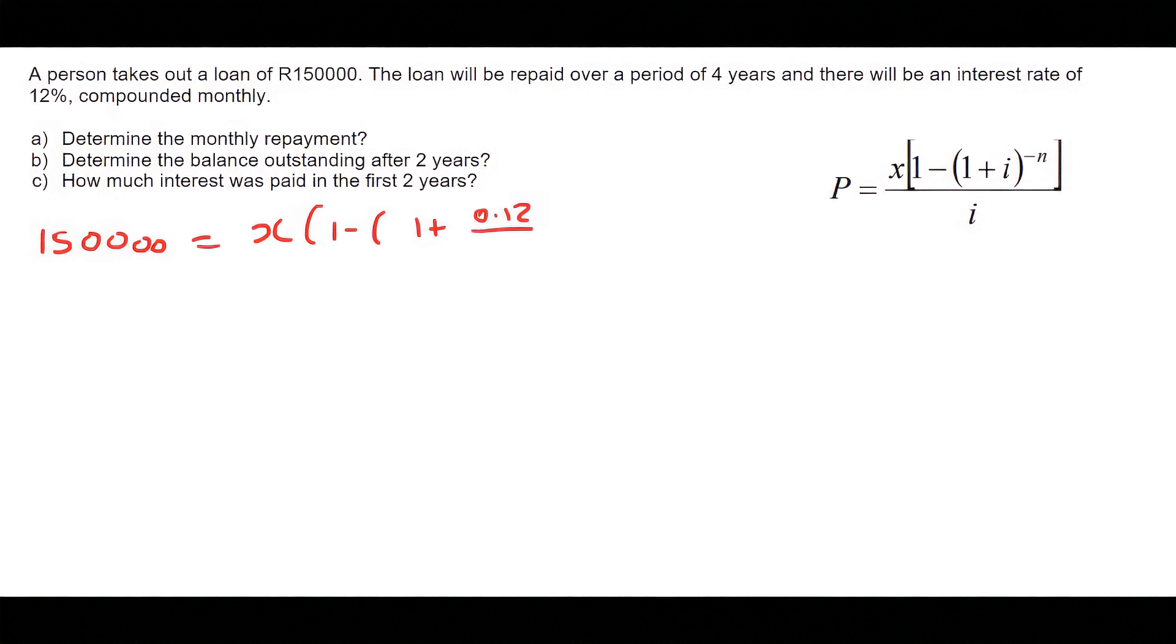The interest rate is 12%, compounded monthly, and it's four years, so four times twelve is 48. There's nothing challenging with that, that's just a straightforward present value calculation. If you work that out, you're going to get that X equals 3,950.08, and that would be in Rand.